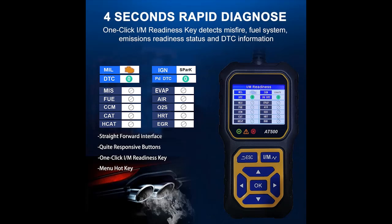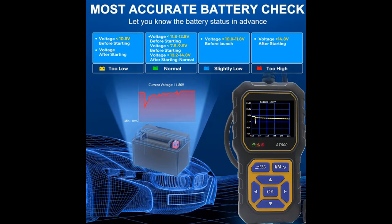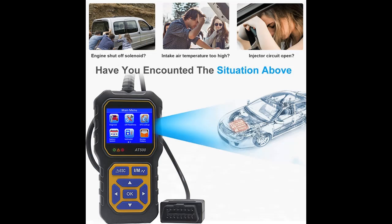The device graphs the waveform of the cranking system. It also performs a charging system test, analyzing the state of the charging system and displaying the ripple. It shows unloaded and loaded voltage, and graphs the waveform of the ripple test and more.